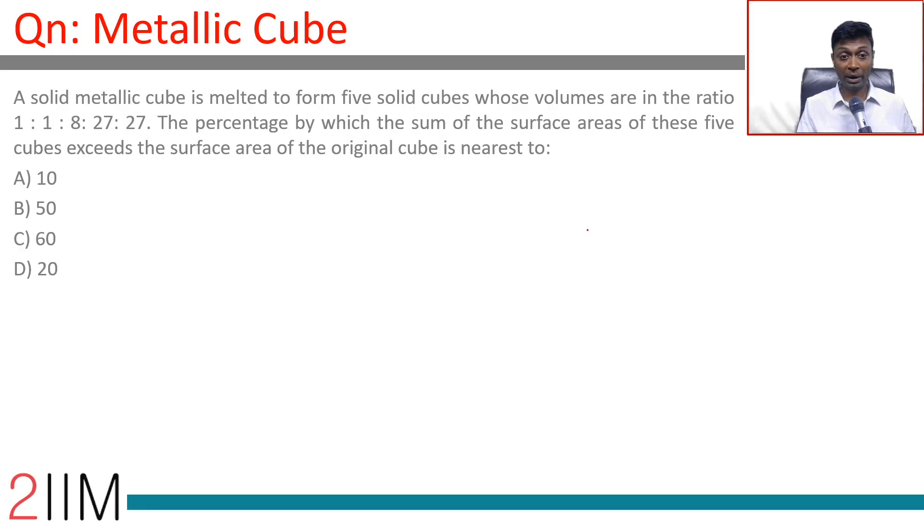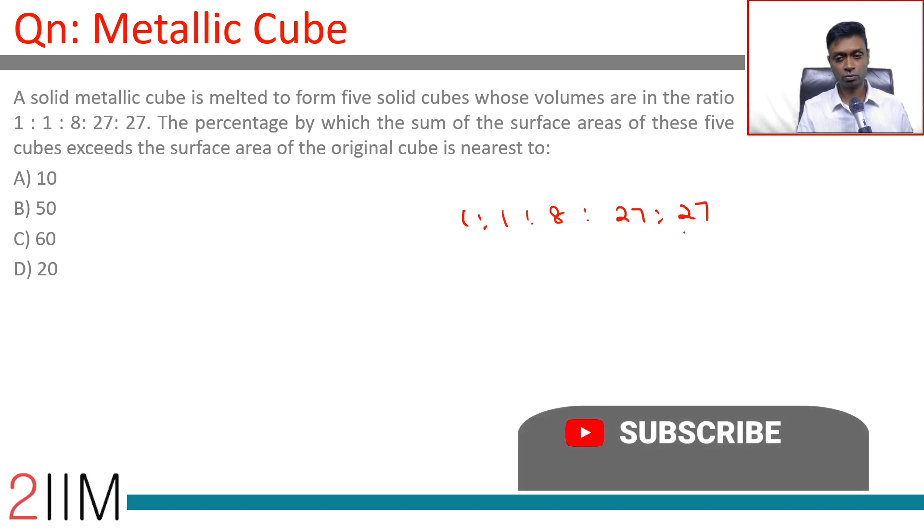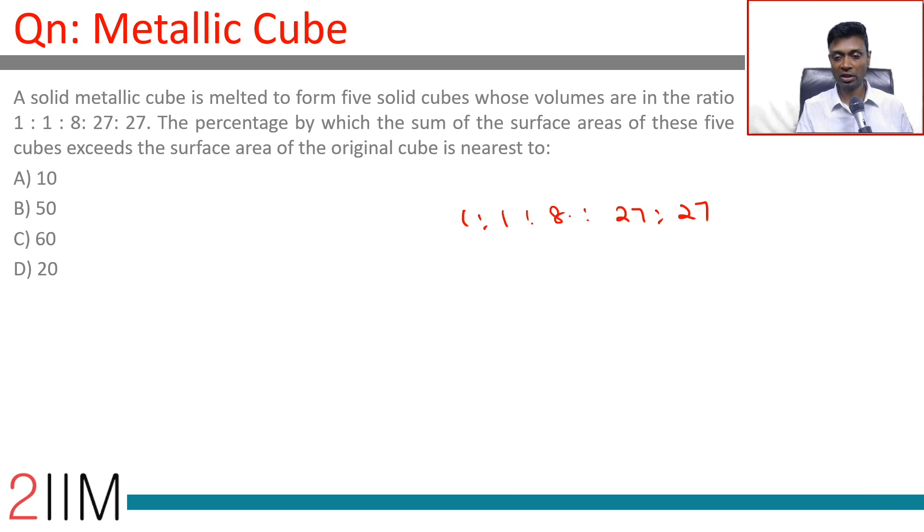A solid metallic cube is melted to form five solid cubes whose volumes are in the ratio 1 is to 1 is to 8 is to 27 is to 27. We add all of this: 27, 27, 8, 1, 1, which adds up to 64.